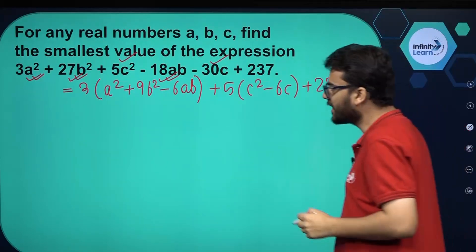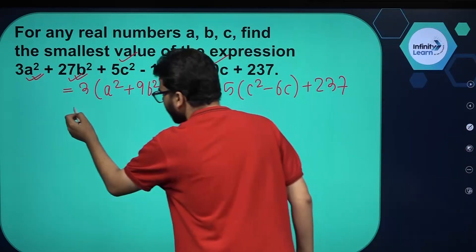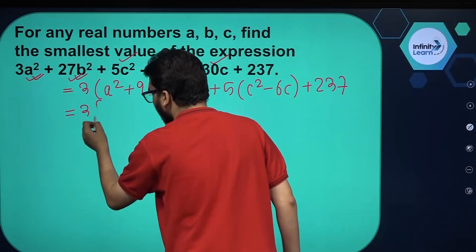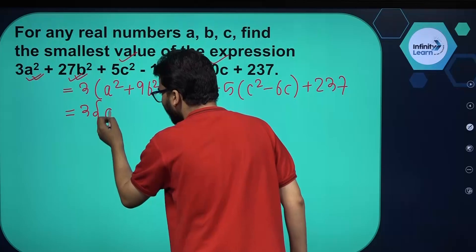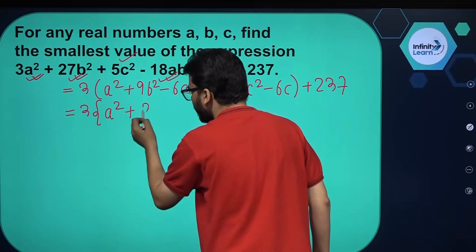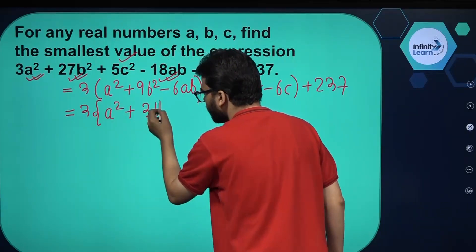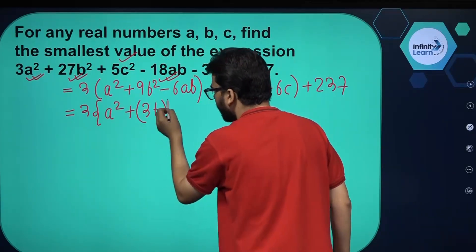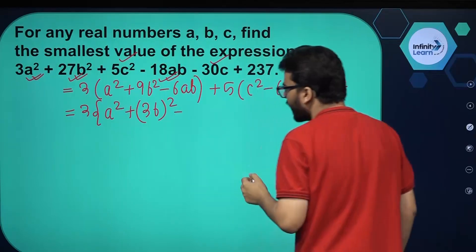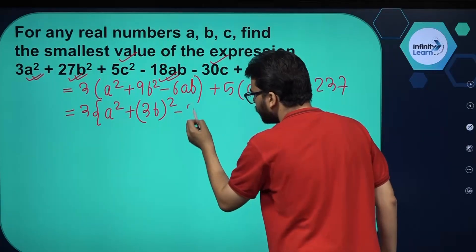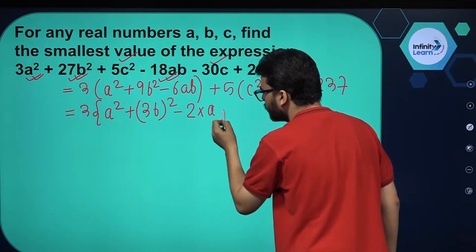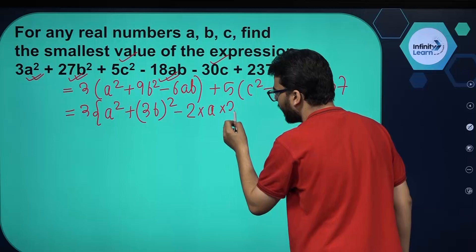If we further simplify, we can write a squared plus 3b the whole square, minus 2 times a times 3b. This sets up the (a minus 3b)² identity for the first group.